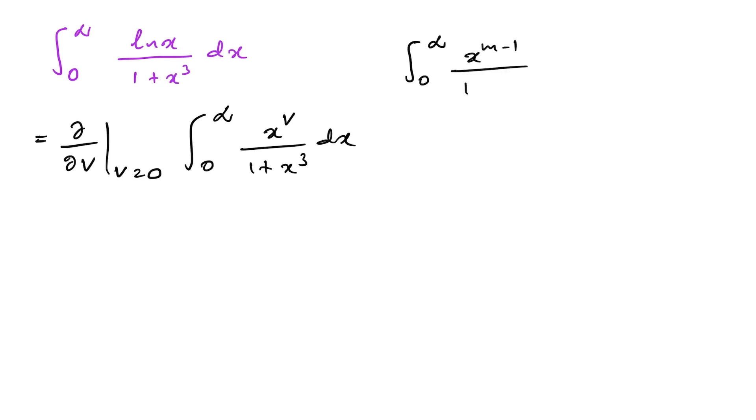Is equal to 1 over n times pi over sine of pi m over n. So here we have this type of integral, so we can write this is equal to partial derivative here v is equal to 0.